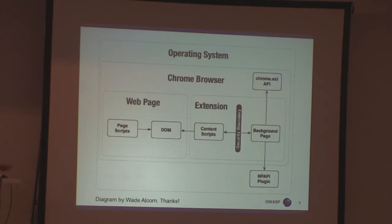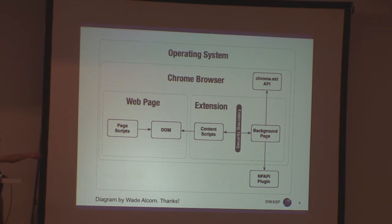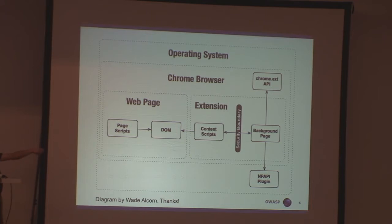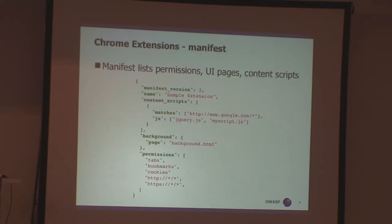Looking at the whole picture: content scripts get access to the DOM of the website the user visits, as well as the usual JavaScript that runs on a page. But the background page and other UI pages are the only ones with access to the powerful API. There's a clear security boundary between those two components — they cannot call each other's code. They can only communicate by something similar to the postMessage API in HTML5. As highly privileged applications, they need to be governed, and the manifest file is the single file which describes the permissions that the extension needs.